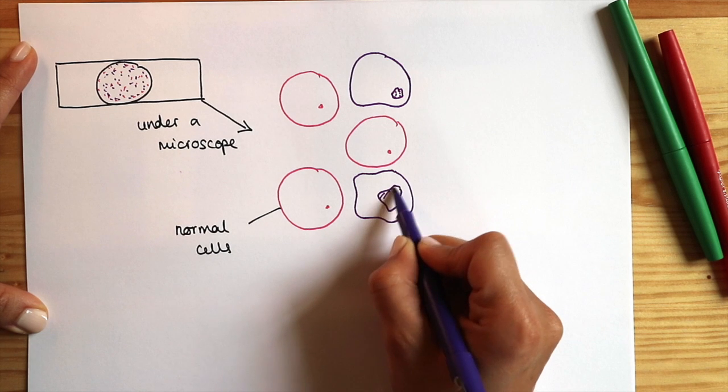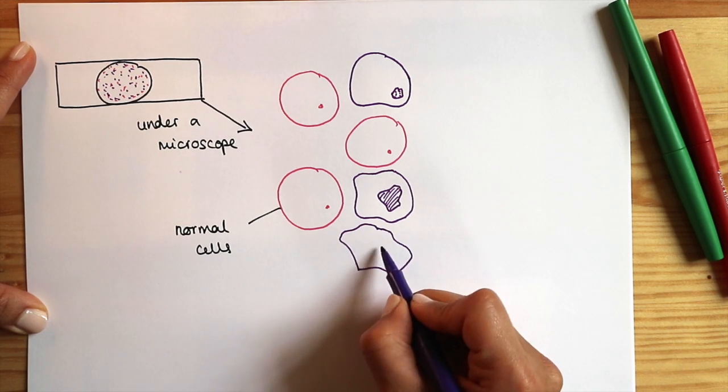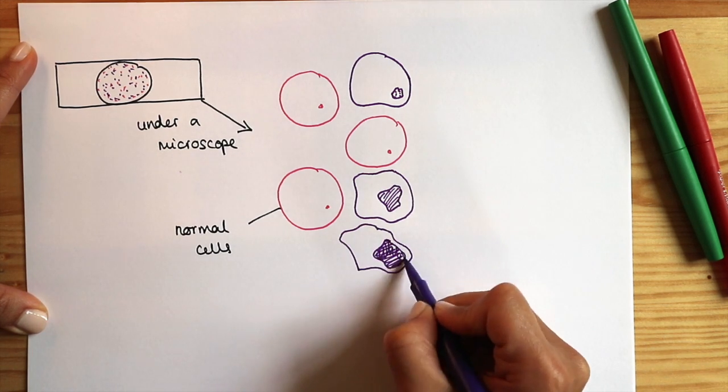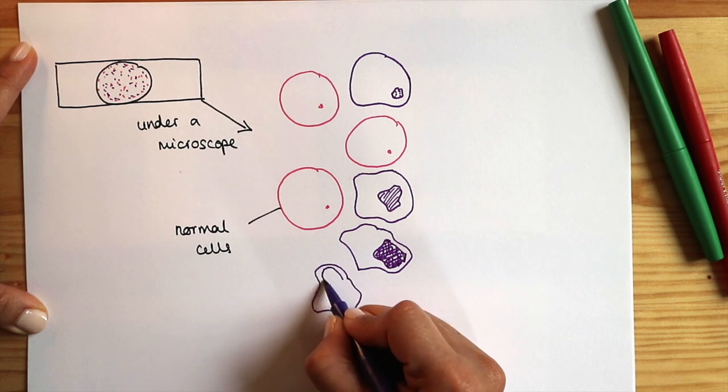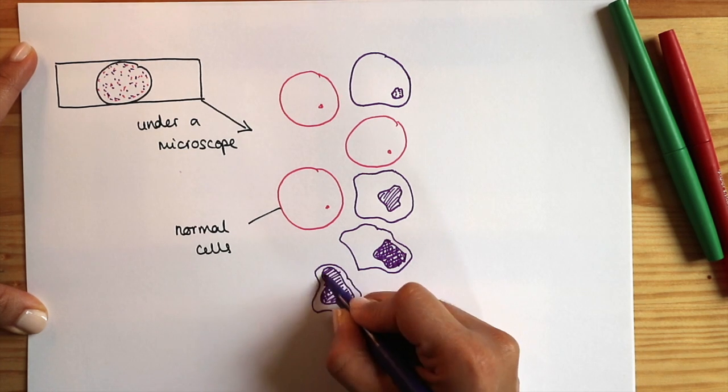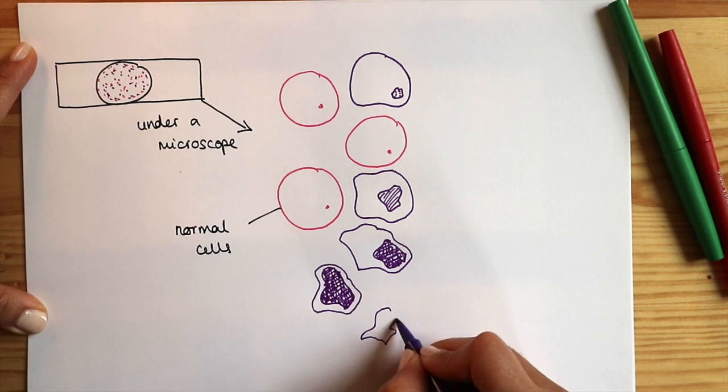When we're looking for abnormal cells, we're looking to see if there are any cells that have changed in shape or size or have a different abnormal looking nucleus which is the purple bit that I'm drawing in the centre of the cells.